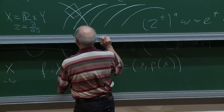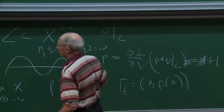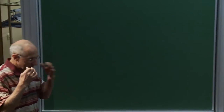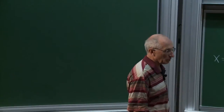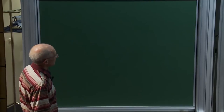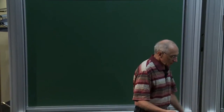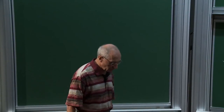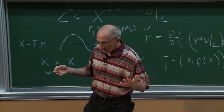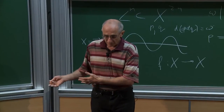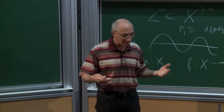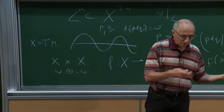If you approach symplectic topology with a topological mind, you see a lot of similarity between symplectic problems and topological problems, also in contact geometry. The symplectic form has an extremely large group of automorphisms. Unlike the Riemannian case, you might think of symplectic geometry as a cousin of Riemannian geometry where you replace a symmetric form by a skew-symmetric form, and symplectomorphisms would be like isometries.